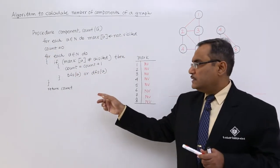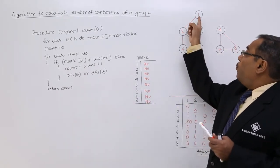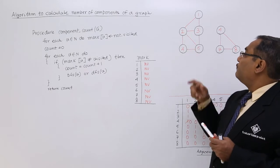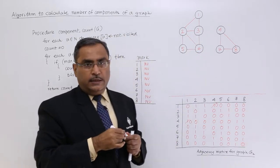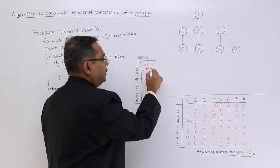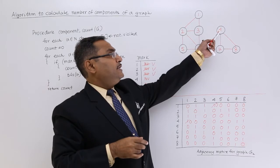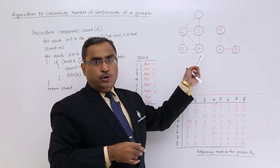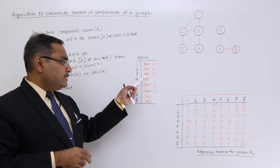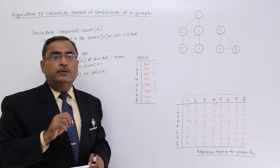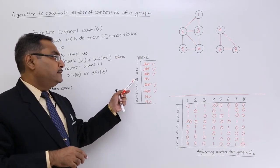If BFS or DFS is called with node number 1, then nodes 1, 2, 3, 5, and 6 — all these locations will be initialized to visited. But since node 4 is not adjacent to any of those nodes, BFS or DFS cannot traverse that subgraph. So nodes 4, 7, and 8 will remain as not visited in the mark array.